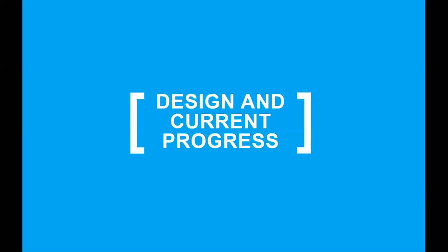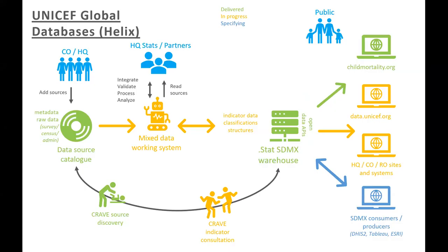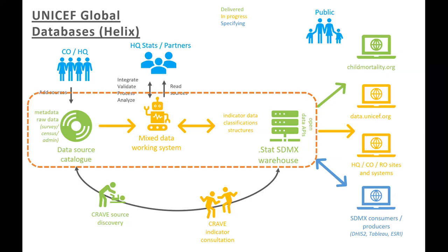Now let's get into what this actually looks like. First, a quick snapshot of UNICEF's data architecture — the current UNICEF global data system is called Helix. I want to draw your attention to the middle box: we have a data source catalog with raw microdata from tens of thousands of surveys and international models. That goes through a mixed data working system where we produce the indicator values and disaggregations, and then those values are pushed into a .stat SDMX warehouse. From that warehouse it can be pushed out to different consumer interfaces — the blue one being the DHIS2 compatibility interface we've been specifying from our SDMX backend.